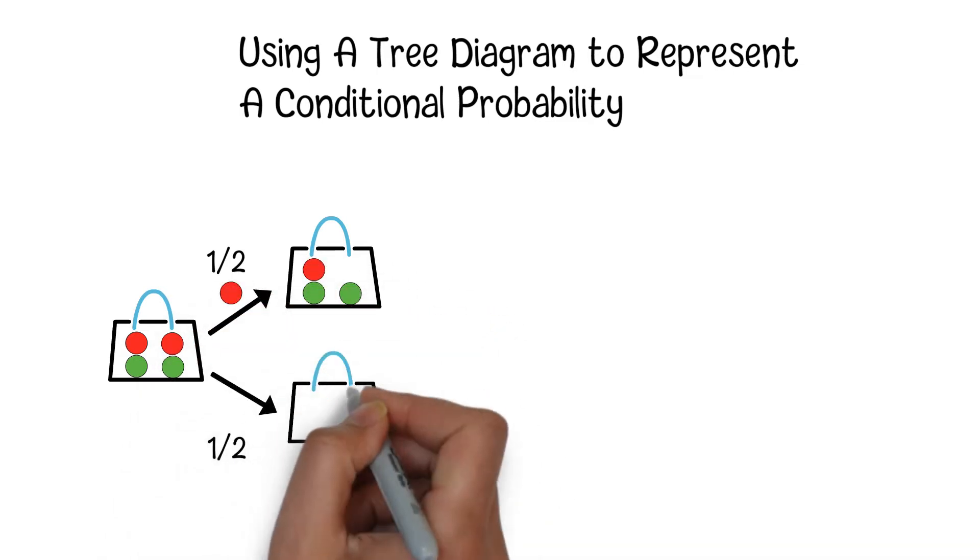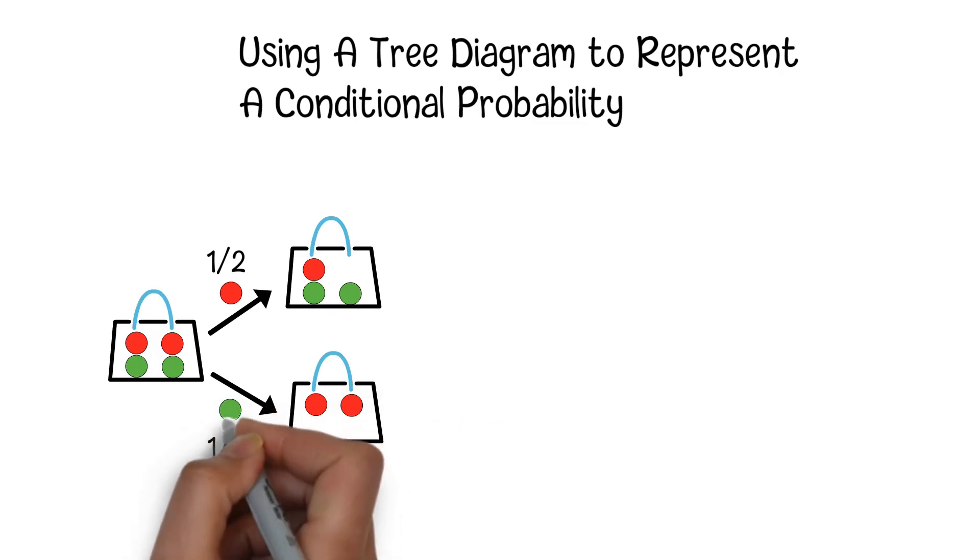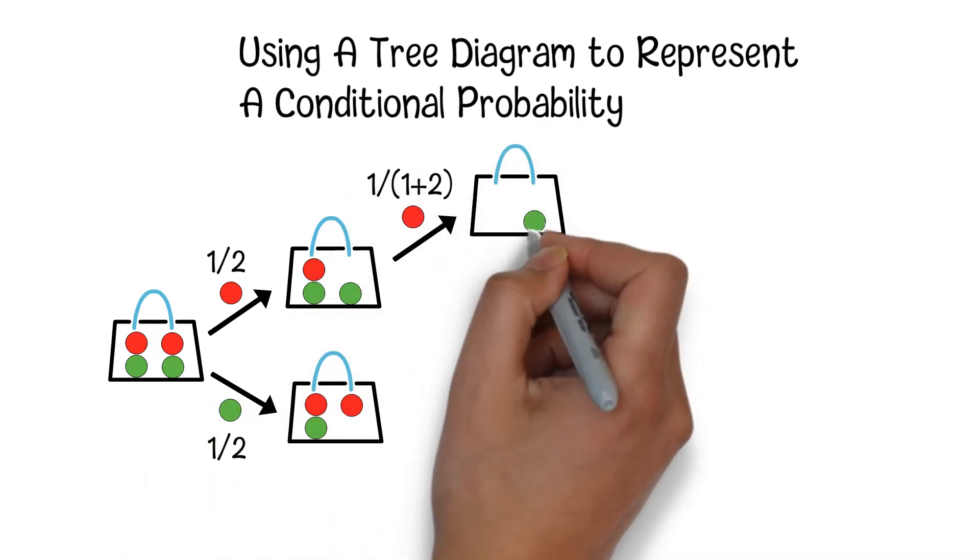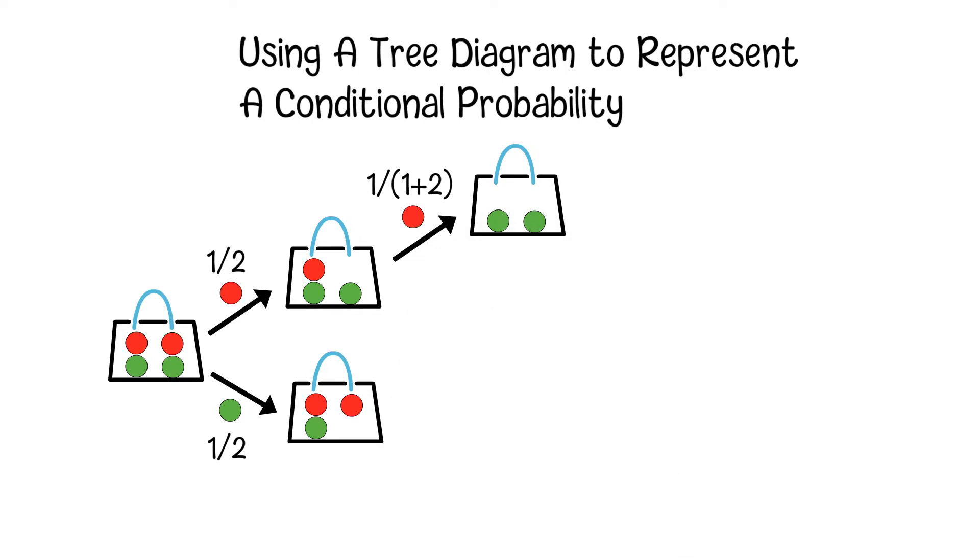If you get a red ball in the first round, we can go one step further. You will see we will have a probability of 1/3 to get another red ball and 2/3 probability to get a green ball.